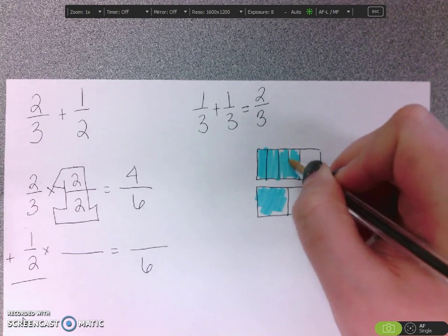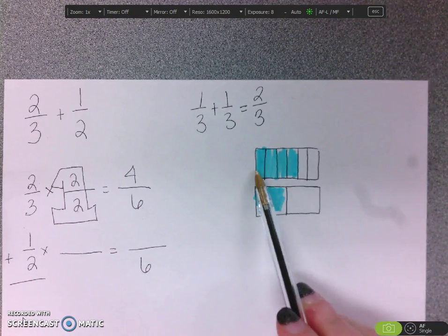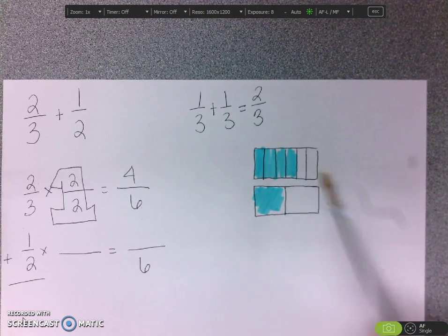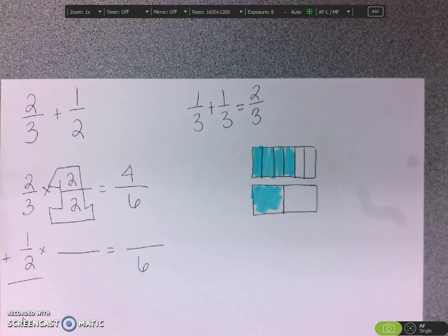We can see that in our picture. We just had two-thirds. Now I turned it into one, two, three, four, out of one, two, three, four, five, six. Did I change how much was colored in there? No, I didn't change how much was colored in there. I just changed how many slices were in it.